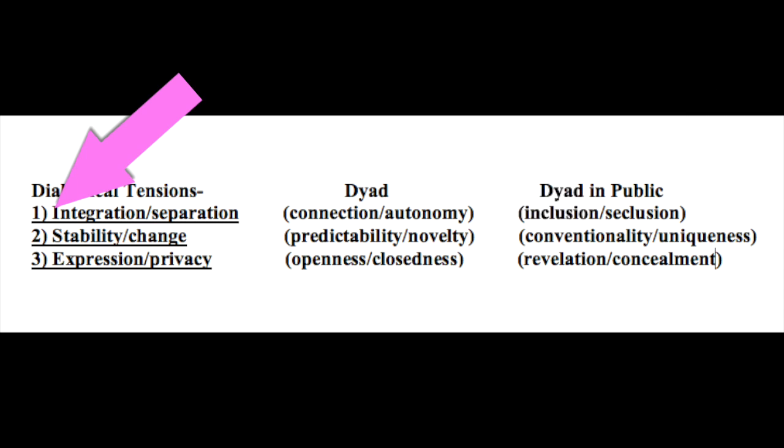Integration separation is the first type of tension I want you to know about. When we're talking about integration separation, we're talking about how much time you're together and how much time you're apart. In any relationship, you have to decide how often you're together and how often you're apart — therefore it's a dichotomous tension. In order to figure out how much time we spend together and apart, we need to come to some kind of conclusion through communication.